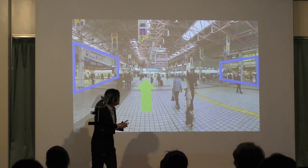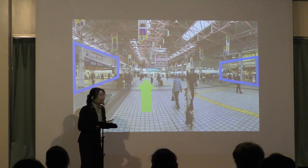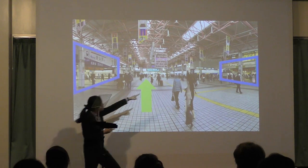Therefore, changing trains at Kanayama Station is complicated even for Japanese people. I thought: do you know the structure of Kanayama Station? On the subway, you sometimes have to turn right and sometimes turn left when you exit the Meitetsu ticket gate, because there are two ticket gates at Kanayama Station — one for Meitetsu and one for the subway.